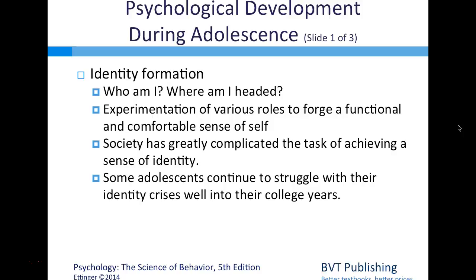Psychological development during adolescence centers heavily on identity formation—who am I, where am I headed? Adolescents experiment with various roles to forge a functional and comfortable sense of self. Society has greatly complicated the task of achieving a sense of identity, and some adolescents continue to struggle with identity crises well into their college years.